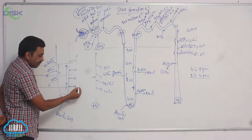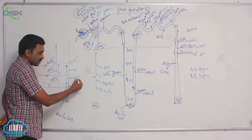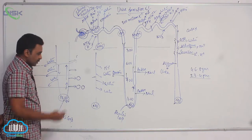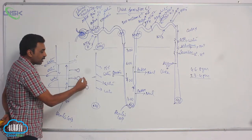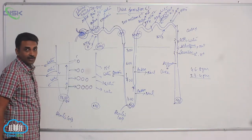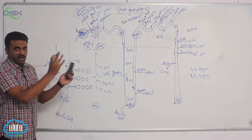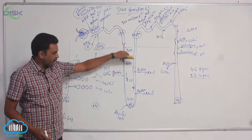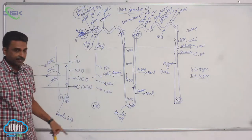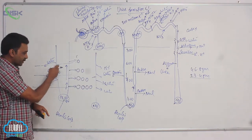As fluid moves along the ascending limb, salts come outside at each level. When salts come out here, more salts come out further along. Likewise, as the fluid progresses, more salts are released at each successive point. So going deeper into the medullary interstitium you see more salt inside and less salt in the outer region, and less salt outside in the upper zone.